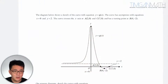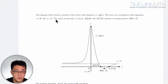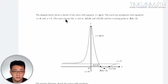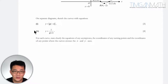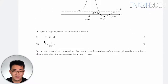Let's look at this question on transformation of graphs. The diagram below shows a sketch of a curve with equation y equals g(x). The curve has asymptotes with equations x equals 0 and y equals 2. The curve passes through points including (2a, 0), and we are told to sketch a curve with a given equation.